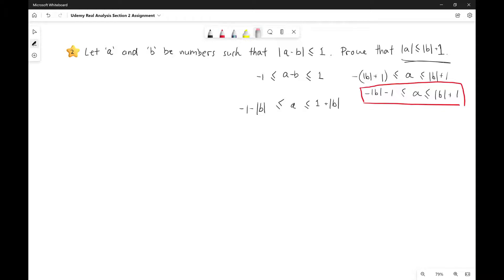Yeah. Then we get negative 1, nice. That's looking a lot like, yep. And then that's A is less than or equal to the absolute value of B plus 1, which is greater than or equal to the negative of the absolute value of B plus 1, which implies that the absolute value of A is less than or equal to the absolute value of B plus 1.